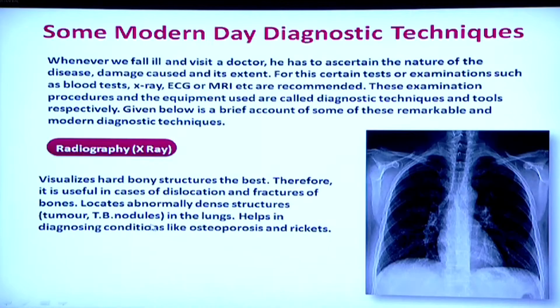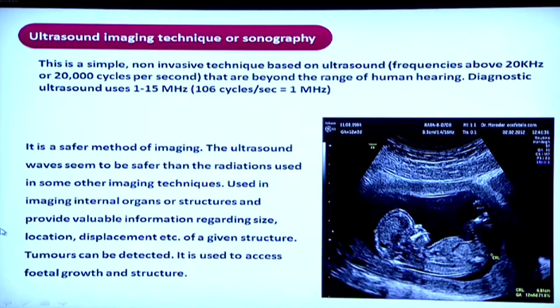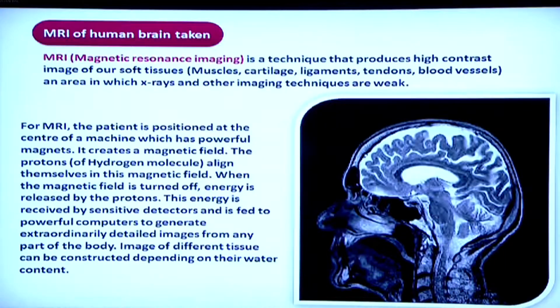Our last topic today is some of the diagnostic techniques that help us detect certain diseases. X-rays help us detect defects in hard tissue like bones and cartilages. Next is ultrasound — ultrasonic waves used as a non-invasive method that does not harm patients. Its best use is to monitor fetal growth in the mother's womb. And lastly, MRI — magnetic resonance imaging — helps us study soft tissues in the body and detect any malformation or malfunctioning. The picture shows what an MRI of the brain looks like.